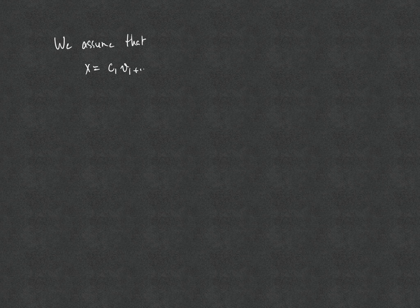To show statement 2, it remains to show that the scalars C1...CP are unique. Whenever we want to show the uniqueness of an object, we assume the existence of two such objects and show they are the same. So we assume the vector X can be written as C1V1 plus ... plus CpVP, but also as D1V1 plus ... plus DpVP.